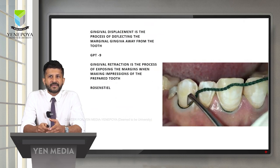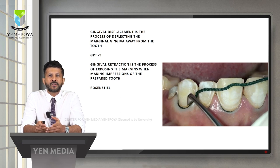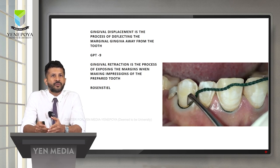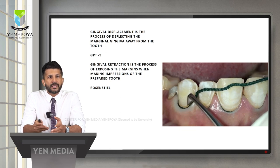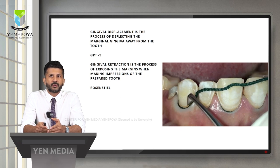As we know that gingiva is attached to the surface of the tooth, we need to displace the gingiva away from the tooth — one reason is to evaluate the margins during tooth preparation, and the second is so that the impression material flows into the sulcus and is recorded in the impression. Gingival displacement is the process of deflecting the marginal gingiva away from the tooth, and it can also be defined as the process of exposing the margins when making impressions of the prepared tooth.